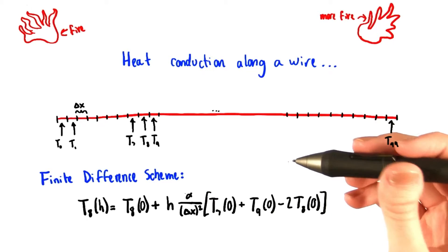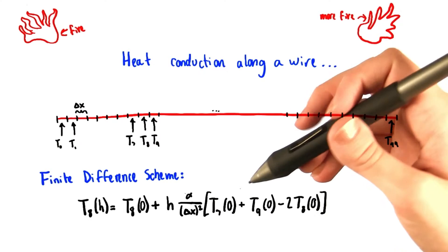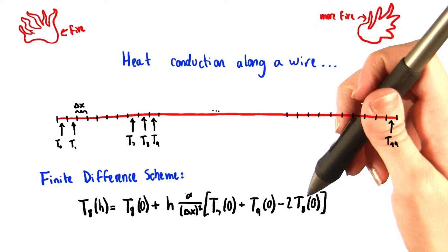This equation tells us that the temperature after the time step right here is equal to the temperature before the time step plus this term, which we can see depends on the initial temperatures of the seventh, ninth, and eighth segments.